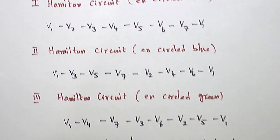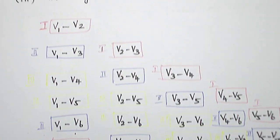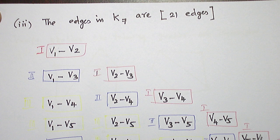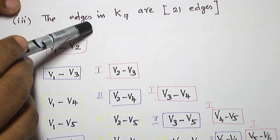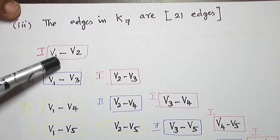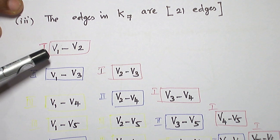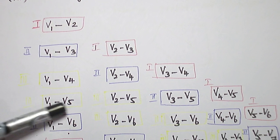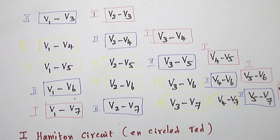Now, we are asked to find out all the edges in K7. So K7 has 21 edges. I have written all the edges of K7: V1 to V2, V1 to V3, V1 to V4, V1 to V5, V1 to V6, V1 to V7.